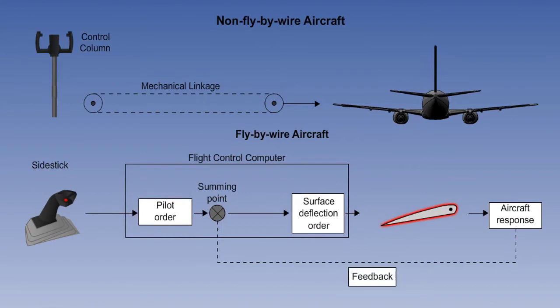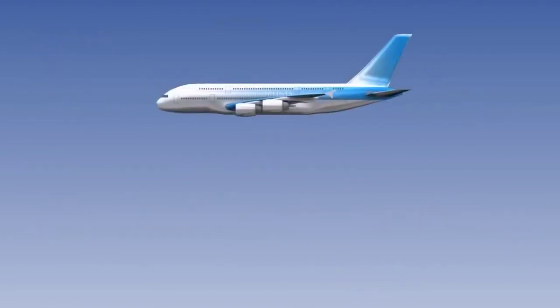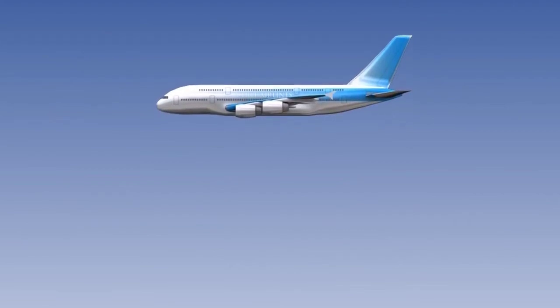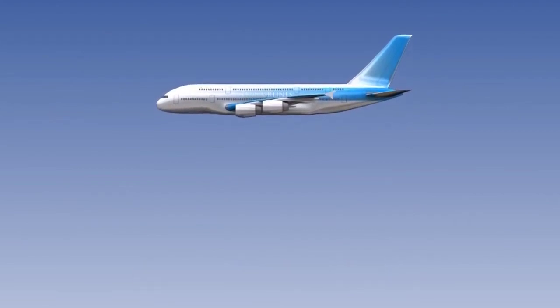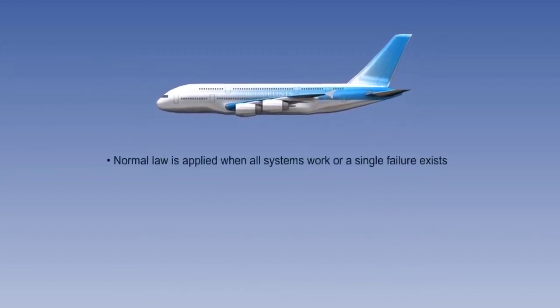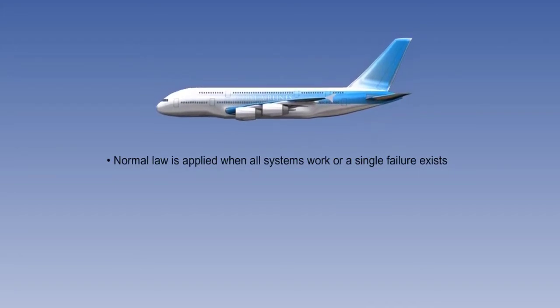The relationship between the pilot input and the control surface movement is called control law. The flight-by-wire control laws are divided into various categories based on aircraft service ability and stages of flight. The first is normal law which is applied when all systems work or when a single failure of a computer or a peripheral system is experienced.